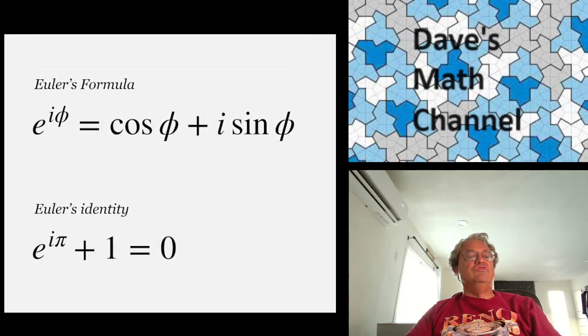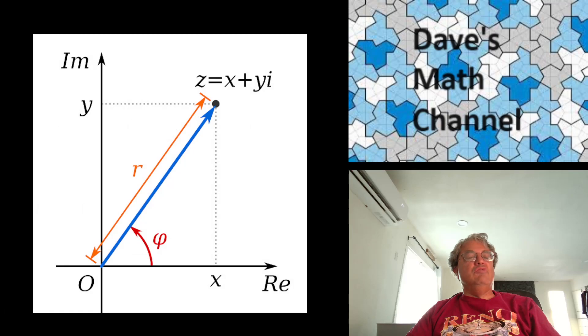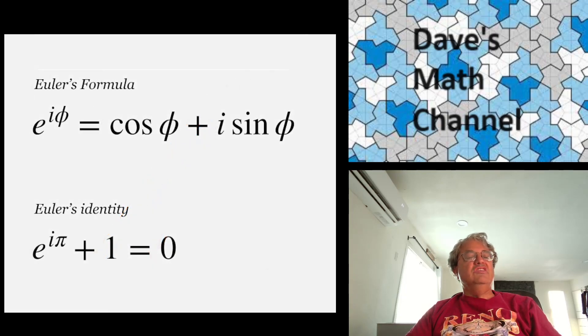And one consequence of Euler's formula is another really amazing formula known as Euler's identity. It's just a special case. Say you plug in pi for phi. Let's look at this diagram again. What would happen if this angle was pi? Well, pi is 180 degrees. That would put you on the negative x-axis. So that means that if R was 1, e to the i pi is just negative 1. And another way to say that is e to the i pi plus 1 equals 0.